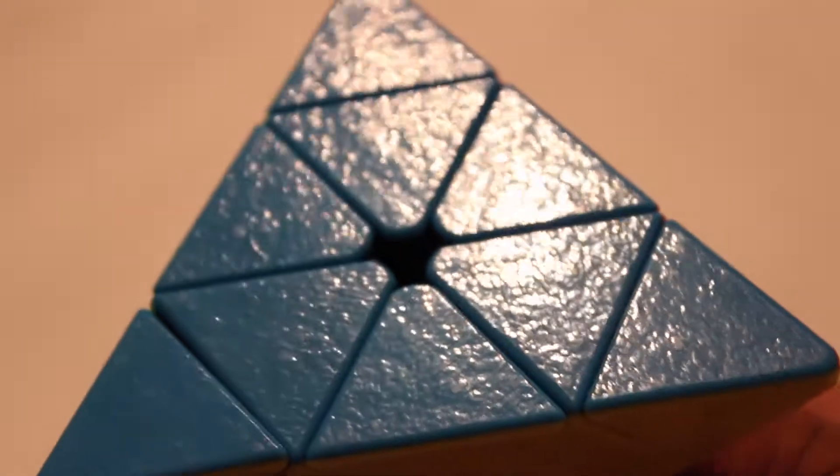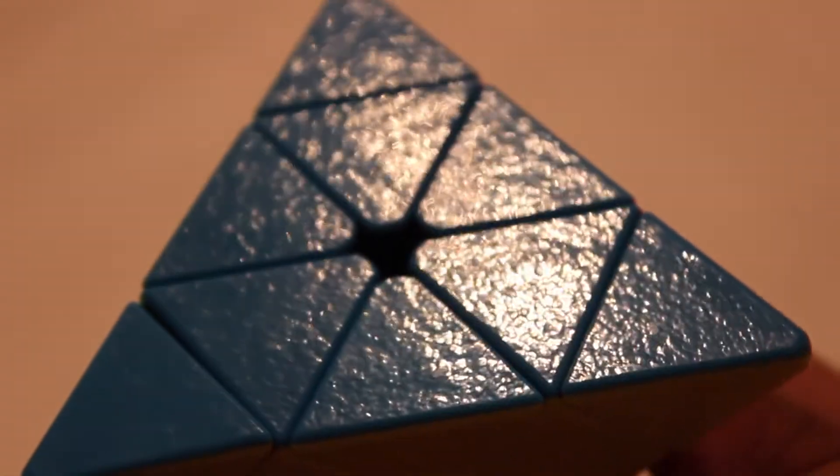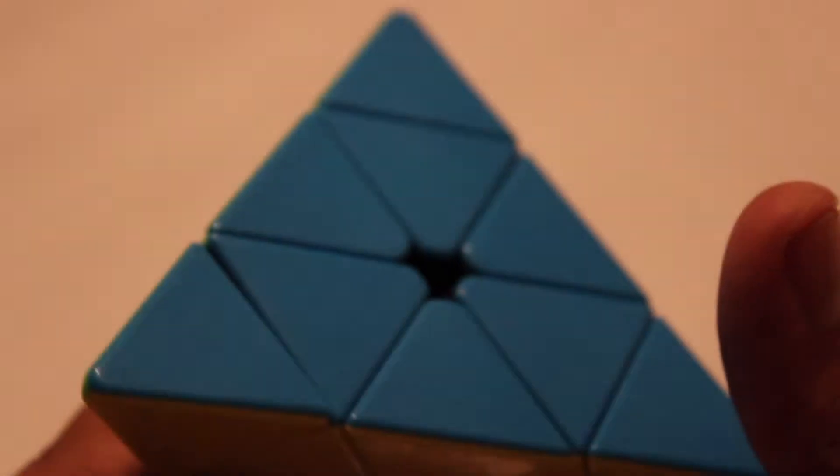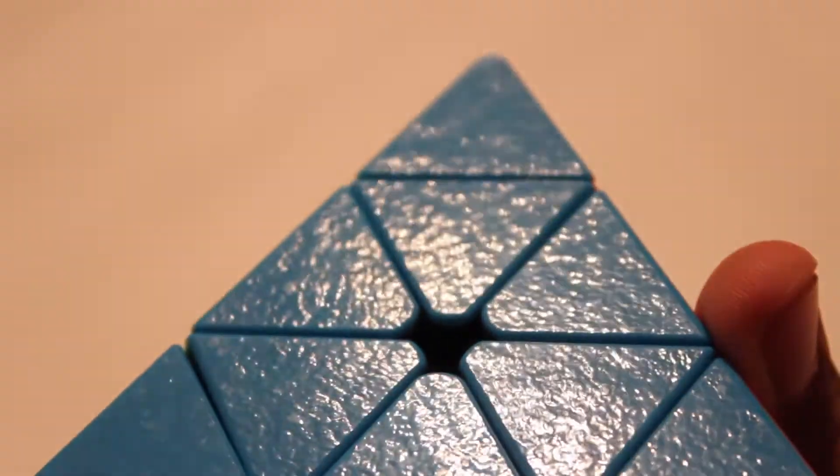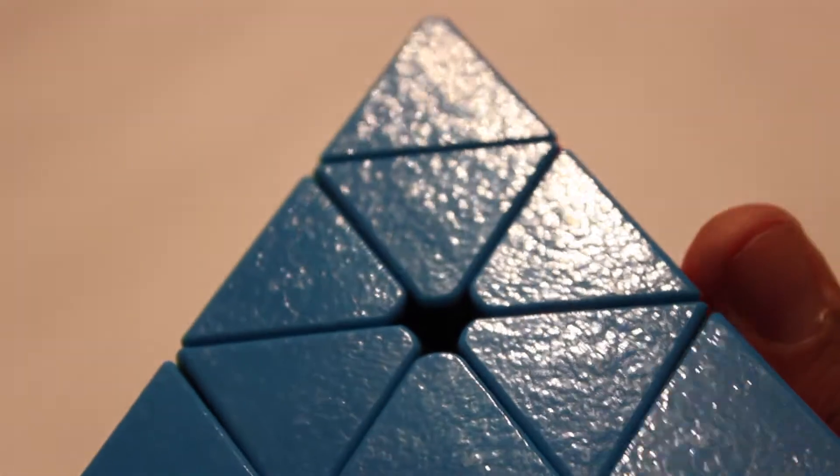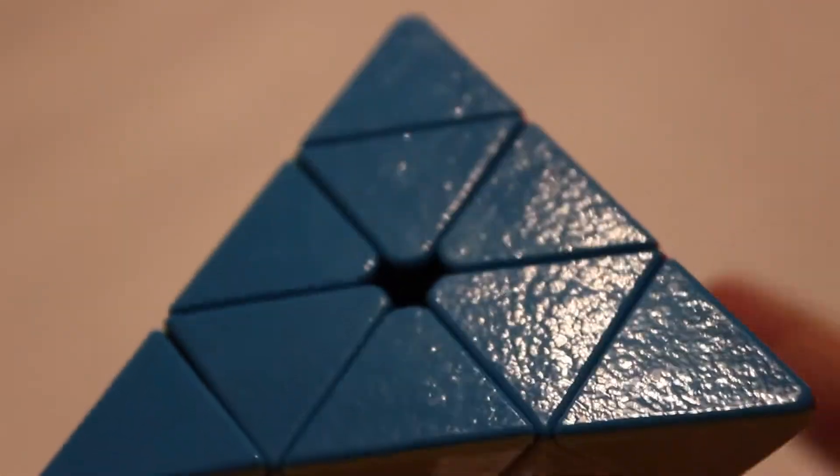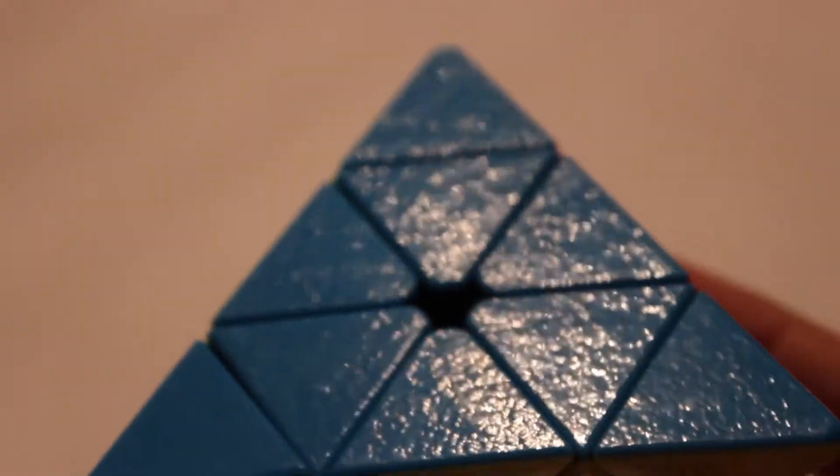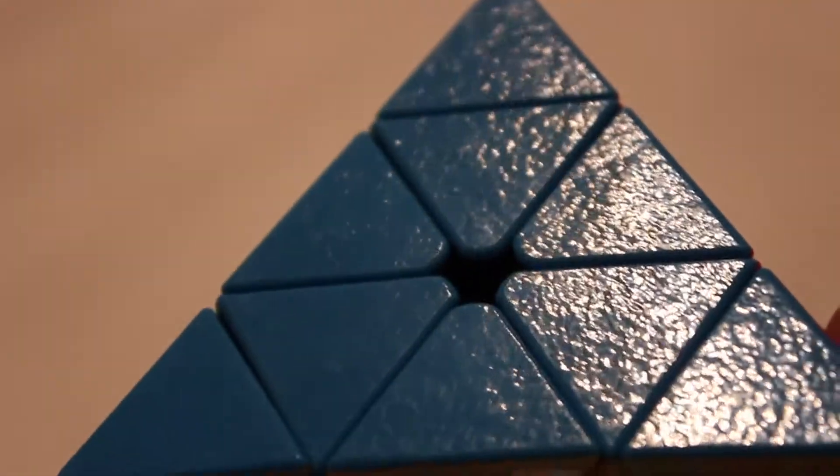As you can see, the Shang Shao Pyraminx has a grip-like texture. This texture on the stickerless pieces gives a little bit better performance of grip. Well, not performance of grip, but it gives you a little bit better grip when controlling the puzzle.